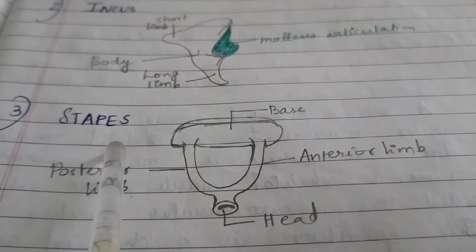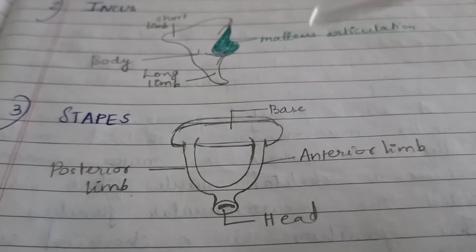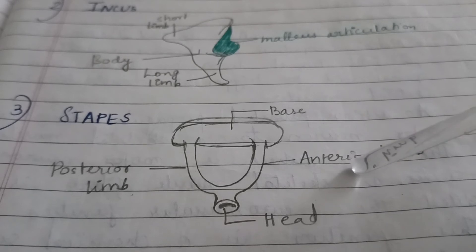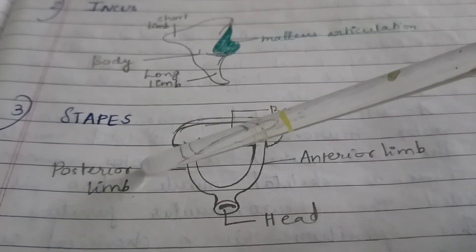The last one, stapes, is a stirrup-shaped bone. It consists of a base, the anterior limb, posterior limb and a head in its structure.